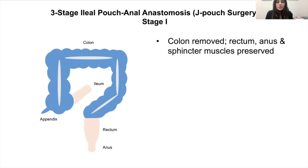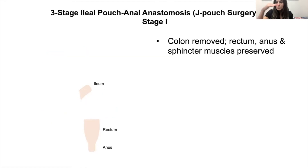In the three-stage operation, in the first stage we just remove the colon. The rectum is not removed — it is left in place and stapled off. It really doesn't cause a lot of problems once stool is no longer going into it. You might have a little bit of bleeding or discharge from the rectum, but the constant flare and symptoms that colitis is causing, even if the rectum is actively inflamed, diminish.